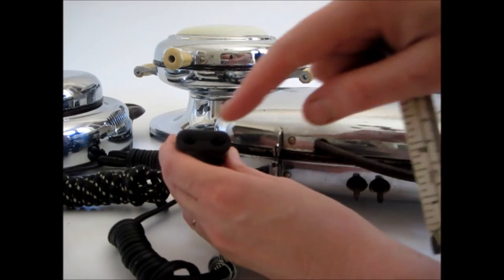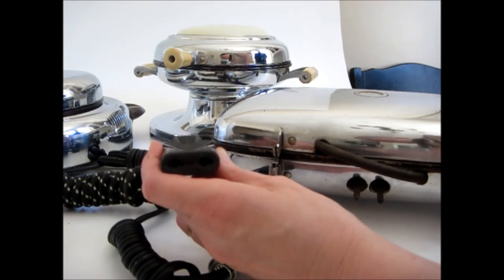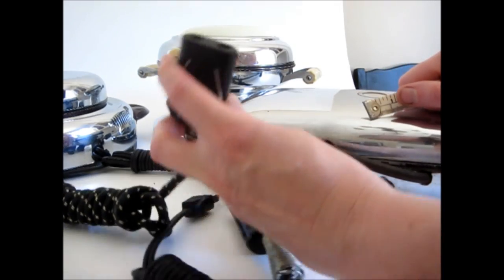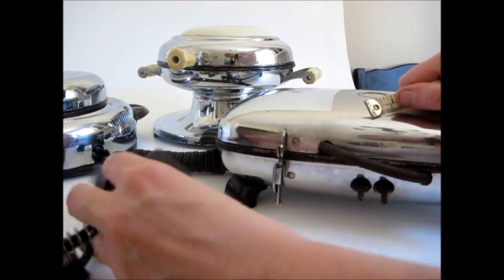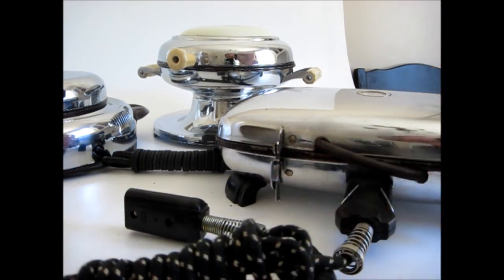Now, this cord with the oval things also has the same spacing and it can fit on either the one with the spades or the one with the round prongs. So you see that fits as well.